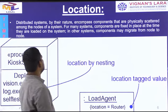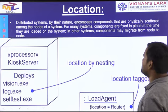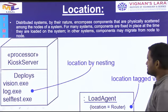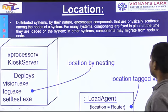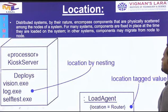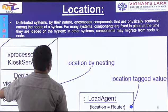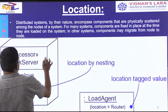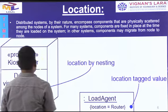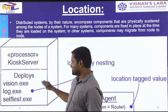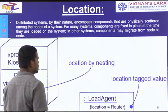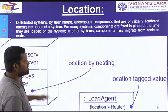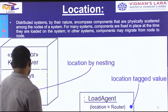Distributed systems, by their nature, encompass components that are physically scattered among the nodes of a system. For many systems, components are fixed in place at the time they are located in the system; in other systems, components may migrate from node to node. To represent location in a distributed system: one processor — kiosk server — deploys visual.exe, log.exe, self-test.exe, all shown as location by nesting, represented with the node symbol. Location tagged value is also represented likewise.